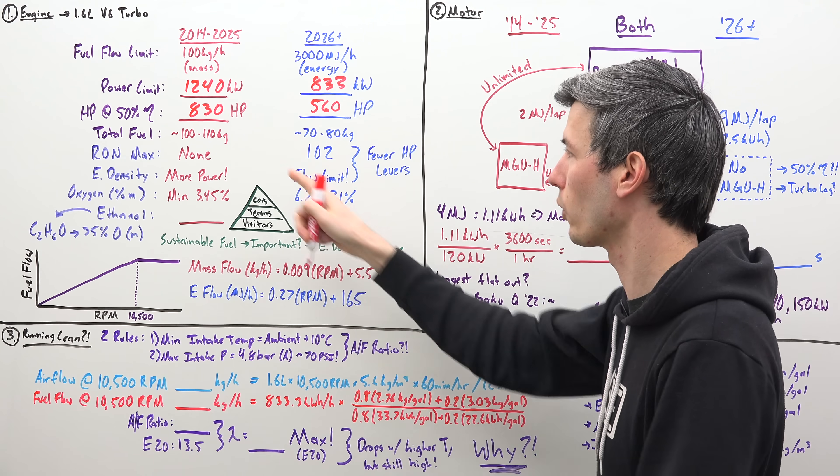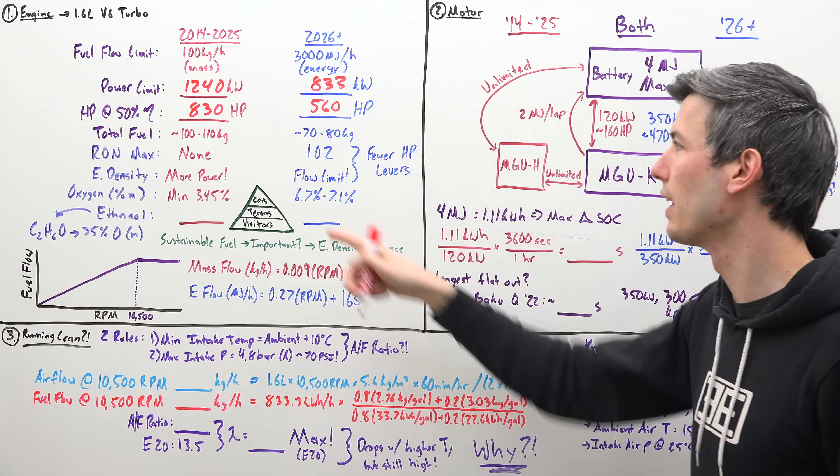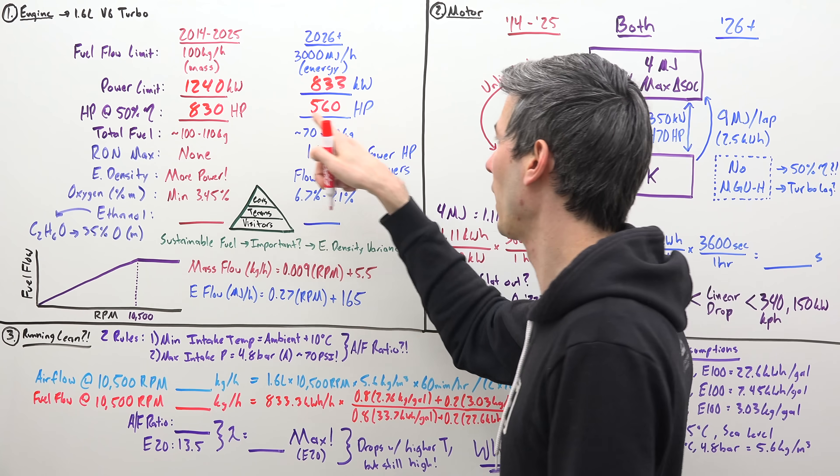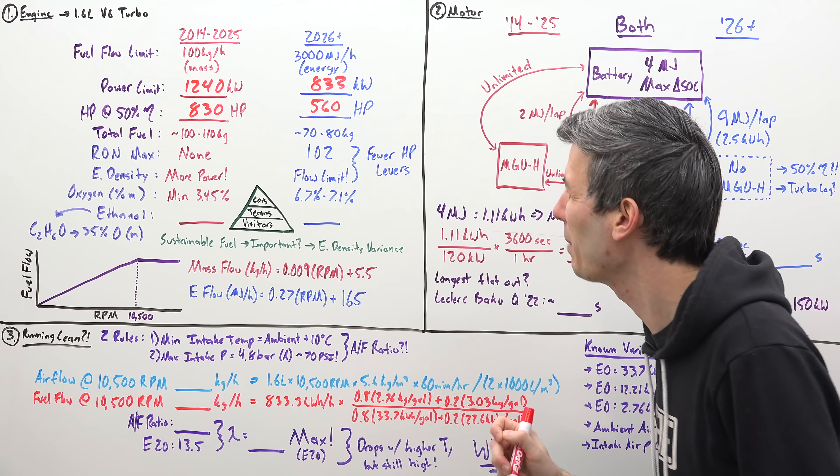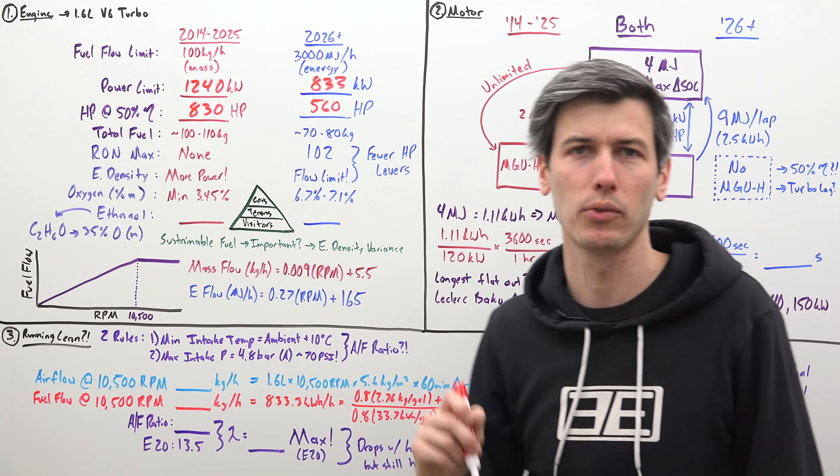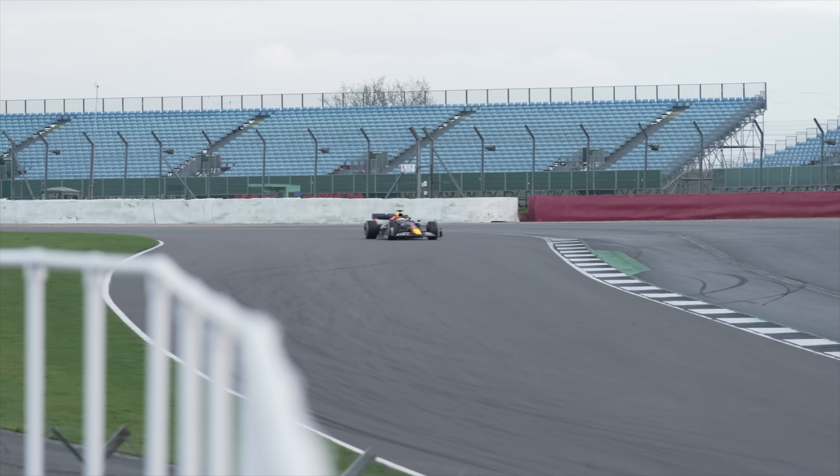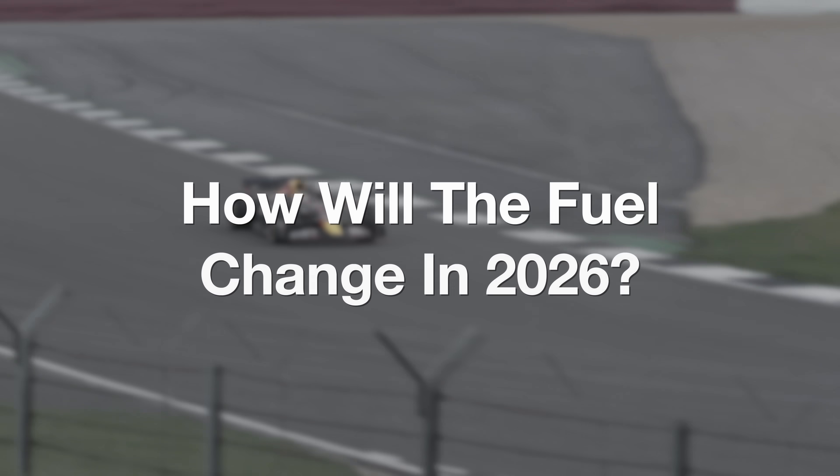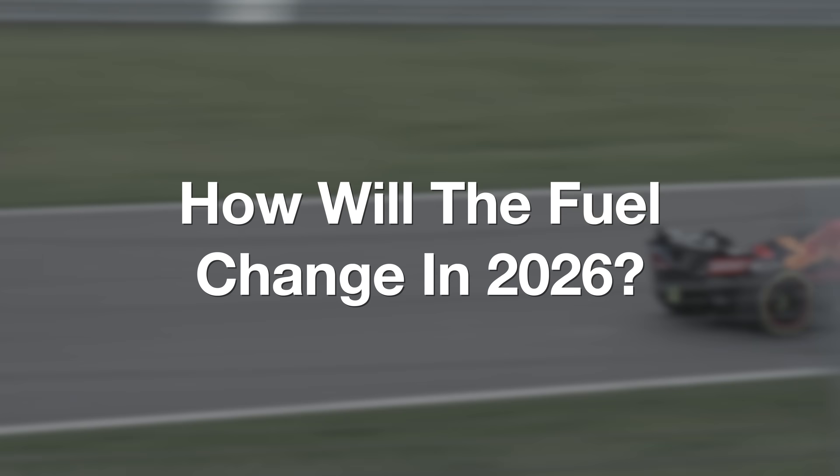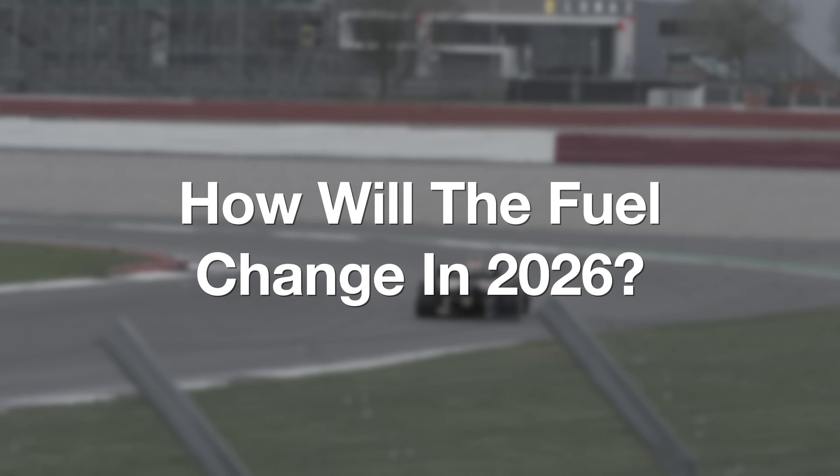Now we're also going to have less fuel. Currently they have about 100 to 110 kilograms of fuel that they can store, and in the future that's going to be about 70 to 80 kilograms. Now there's some really interesting differences with how the fuel is regulated currently versus how those rules are going to change.